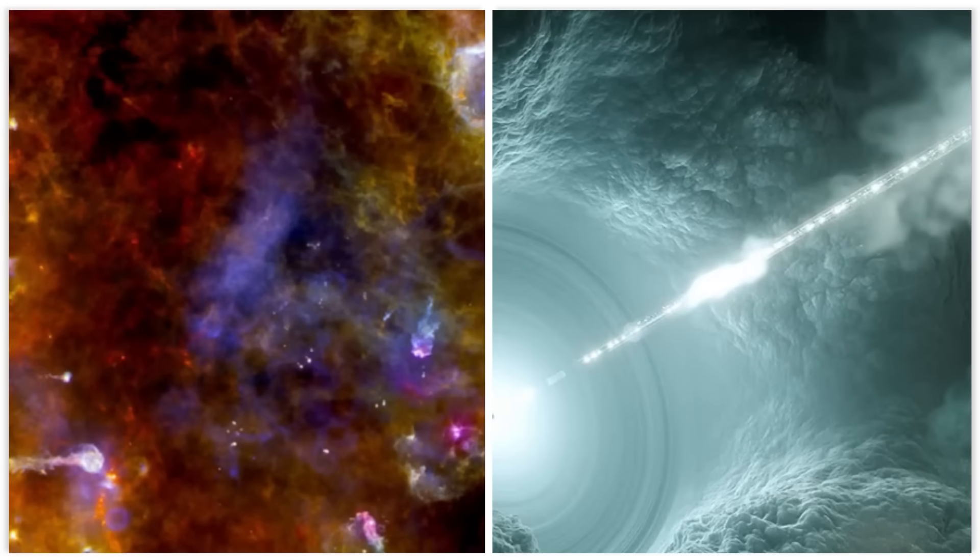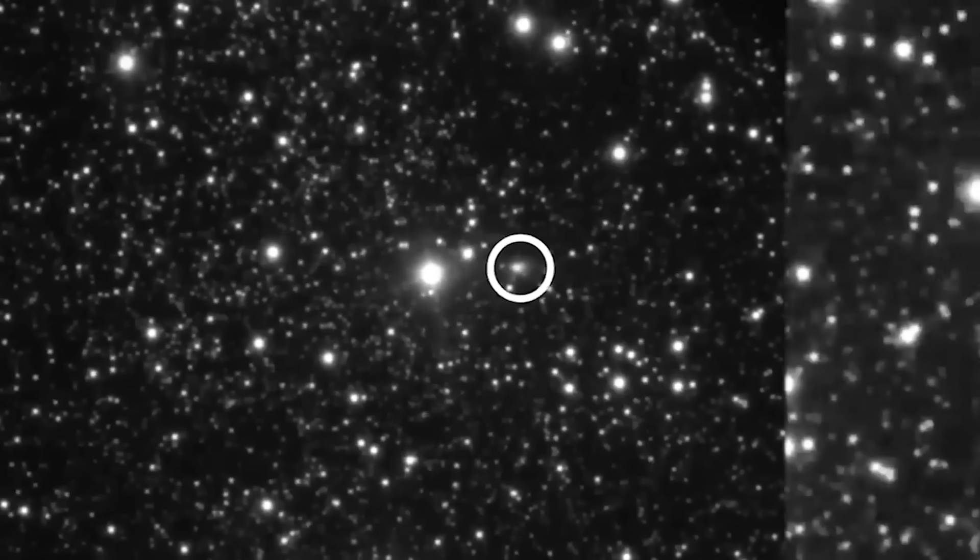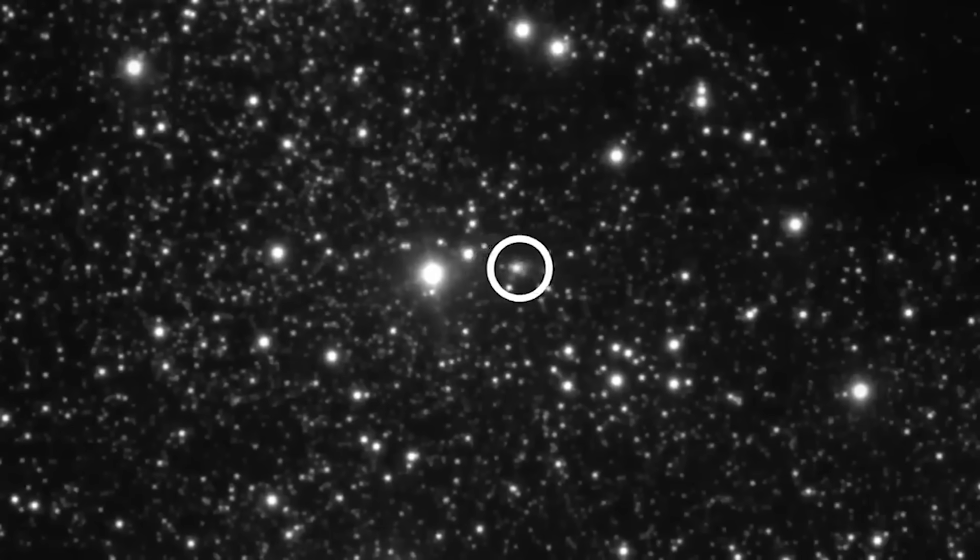You see, for years, we've been finding rocks and ice that wander between the stars. But we've never seen anything like 3i Atlas.